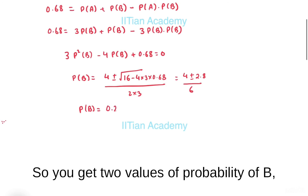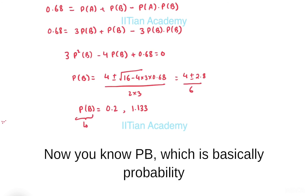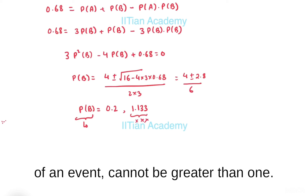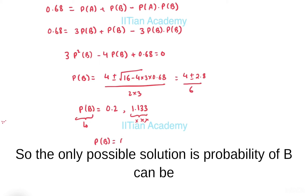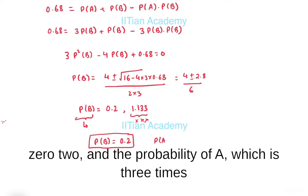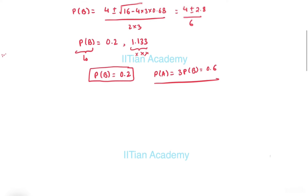We get two values of P(B): one is 0.2 and another is 1.133. Since the probability of an event cannot be greater than 1, the only valid solution is P(B) = 0.2, and therefore P(A) = 3 times 0.2 = 0.6.